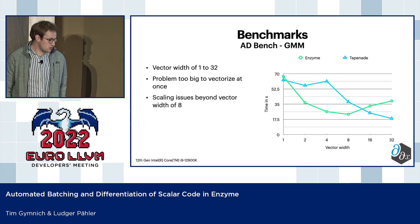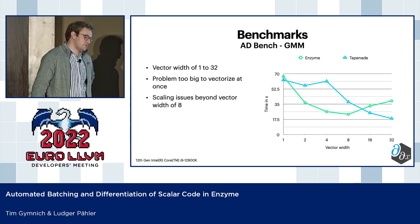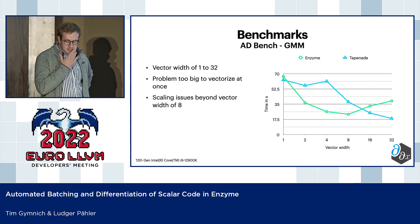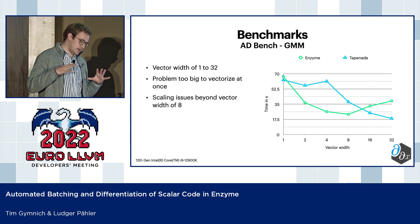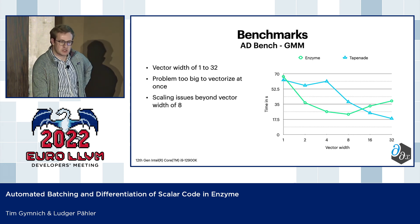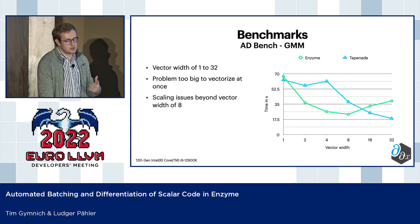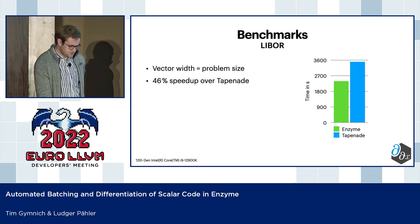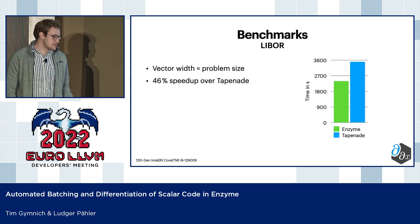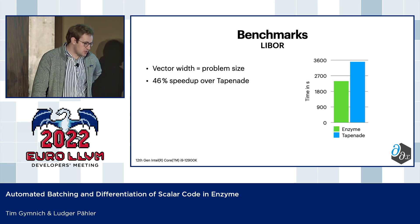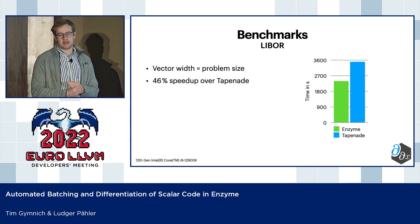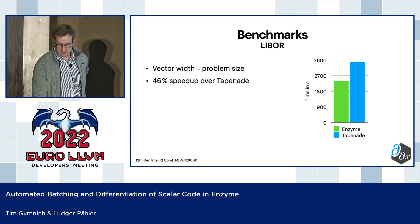This is a Gaussian mixture model where vectors vary between one and 32, where at some point ATBench throws a much larger data set that probably becomes too big to vectorize on the CPU, and then you run into scaling issues. And this is basically a LIBOR benchmark — a credit benchmark — where the vector is the problem size, and we have a very, very sizable speedup over Tapenade.